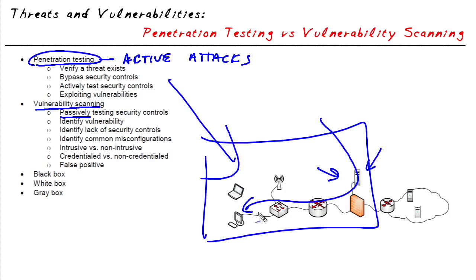One reason a company might consider penetration testing is to verify whether or not their security controls can be bypassed — and if they are, to find out before real attackers start taking advantage of their systems. We want to actively test controls that are in place to make sure they're truly secure, and to make sure the countermeasures we've implemented to mitigate risk are doing their jobs. If the countermeasures are not doing their jobs, penetration testing could result in vulnerabilities being literally exploited by the active penetration tests.